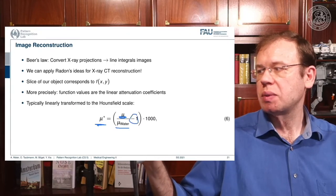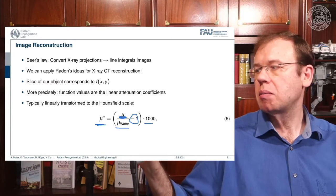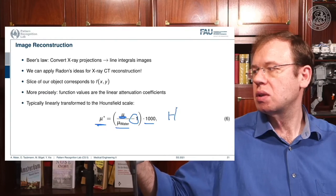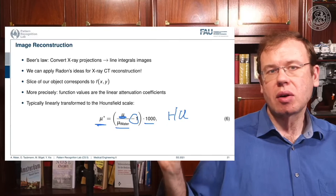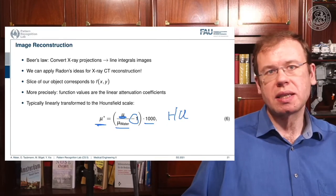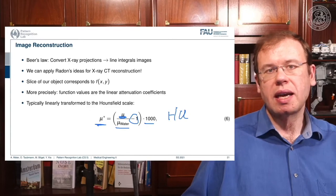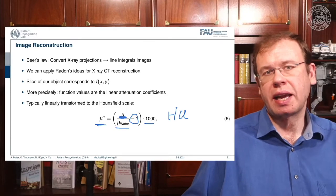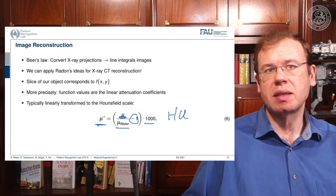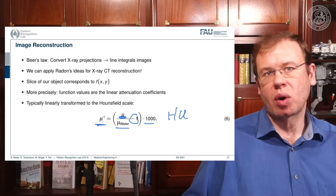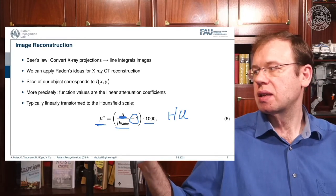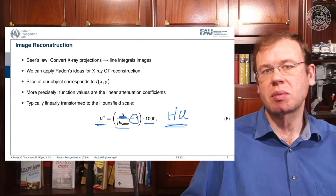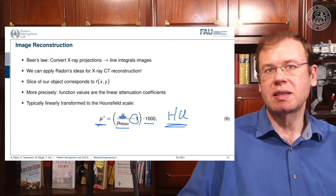The Hounsfield values standardize the absorption coefficient, which we know is energy dependent. They divide by the absorption coefficient of water and subtract one. So if you have water, this would be exactly one, you subtract one, and then you multiply by 1000. The unit is then given as Hounsfield units (HU). The Hounsfield units have the property that they are exactly zero for water and minus 1000 for air. Water is the most important material inside the human body, which is why this scaling has been chosen.